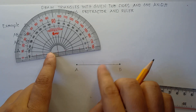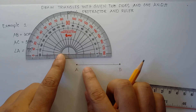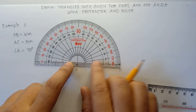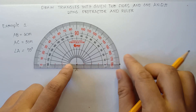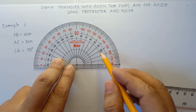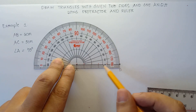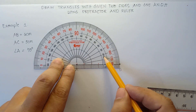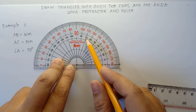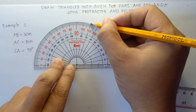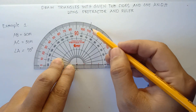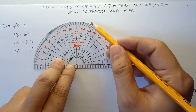You align zero in this horizontal line — align zero in the horizontal line and align point A in the center part of your protractor. We will use the inner numbers for the angles: 10, 20, 30, 40, 50, 60, and then 70 degrees for angle A. This will be our reference for angle A at 70 degrees.